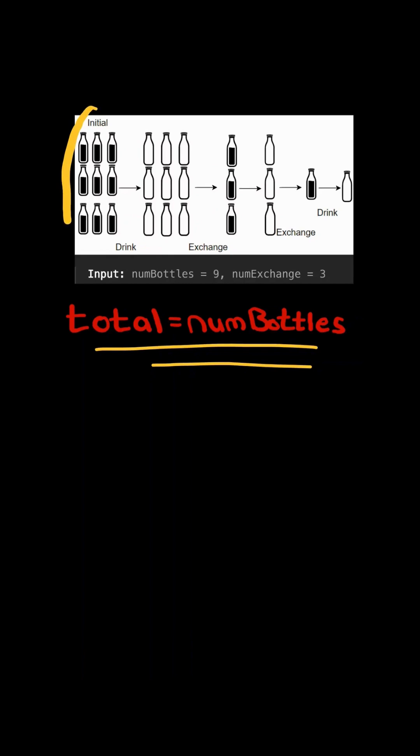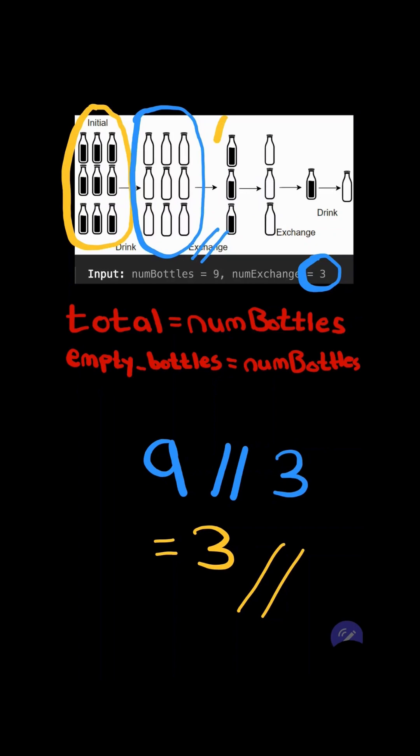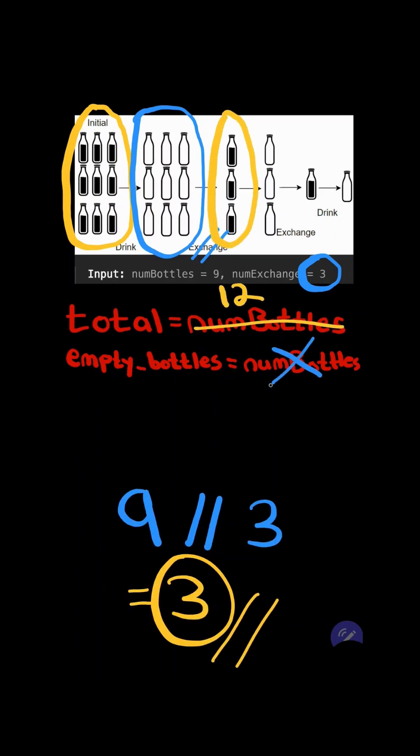First, we will have a total variable set to the number of bottles and we will drink those bottles to get the same amount of empty bottles. Now by taking the empty bottles and dividing it by the exchange rate, this gives us the new full bottle and this adds to our total. Now the empty bottles will be equal to three.